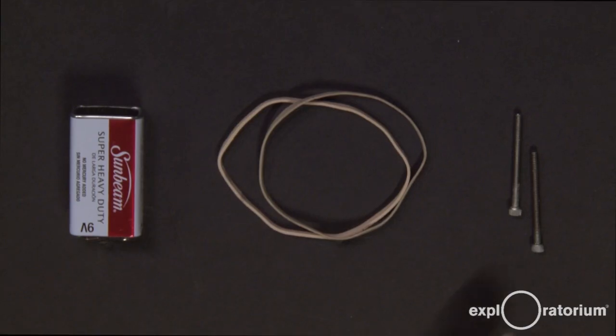To make your electrolysis device, you're going to need two stainless steel screws, two rubber bands, and a 9-volt battery.